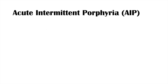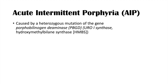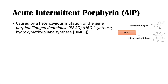So what is acute intermittent porphyria, or AIP? Acute intermittent porphyria is a condition caused by a heterozygous mutation of the gene porphobilinogen deaminase, or PBGD. This enzyme has other names like uroporphyrinogen 1 synthase or hydroxymethylbilane synthase. Essentially, there is an issue in the porphobilinogen deaminase enzyme in the heme synthesis pathway that leads to a buildup of porphobilinogen in the pathway.